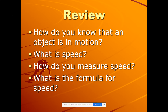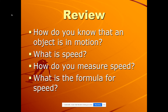We also learned that speed is simply how fast an object is moving, and we can measure speed quantitatively with a formula. The formula for speed is distance divided by time. In order to measure speed, we need two factors: the distance the object traveled and the amount of time it took.